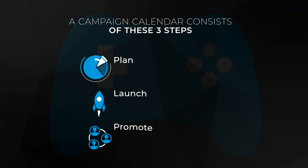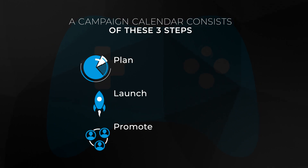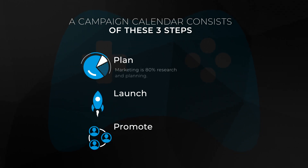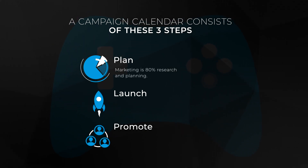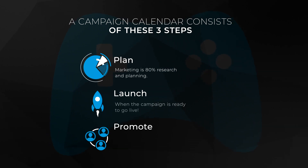Your campaign cycle should consist of three steps: plan, launch, and promote. If you fail to plan, you plan to fail. Proverbs also says: without a vision, people perish.